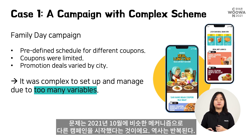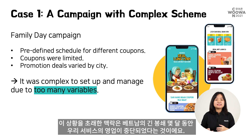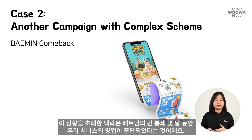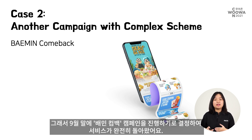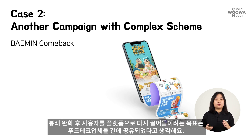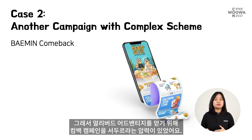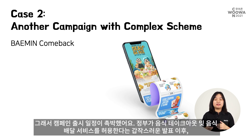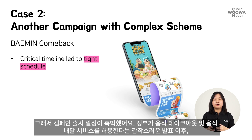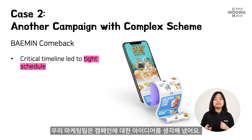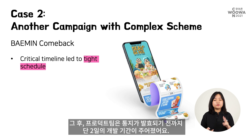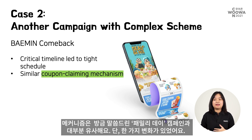Even though that situation was difficult, it was acceptable if it happened once. The problem is that in October 2021, we started another campaign with a very similar mechanism — history repeated itself. During the long lockdown in Vietnam, our services were limited for several months. At the end of September, we decided to run the Be Min Come Back campaign to signify that our services were now fully back. There was pressure to rush the comeback campaign to gain early-mover advantages, so the release time was hurried. After a sudden government announcement permitting food tech and food delivery services, our marketing team came up with the campaign idea, and the product team had only two days for development.